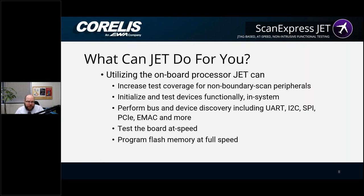We can do bus discovery as well. For example, if we're a little bit limited on development, we can run a bus discovery test — we can look at what's on the I2C bus and report which devices respond at their address. All of this is done at speed. Boundary scan and in-circuit test tend to run slowly, operating a shift register in the tens of megahertz, which means our effective switching rate is very low. However, with JET, we run the CPU at its native speed, so we can test boards at speed — meaning defects that only occur at speed are detectable.